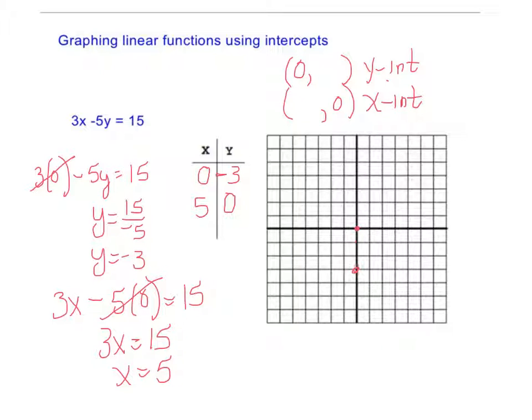And I'm going to go over 0 and down 3. And on the other, I'm going to go to the right 5 and up 0. And then I'm going to very carefully draw a line. That's not bad, really. There you go.